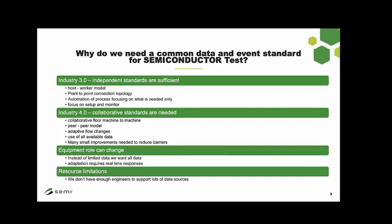In the back end, many small improvements are needed to reduce barriers that eventually add up to large impacts in operations. It's not necessarily always that one killer app giving you a 10% capacity improvement — it's lots of small things combined. Equipment roles can change. Instead of limited data, we want all the data, because we never really know what hidden signals we need to find to understand what impacts performance at a test cell.